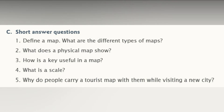What does a physical map show? A physical map shows mountains, rivers, plateaus, lakes, deserts, and other landforms. How is a key useful in a map? A key explains the meaning of the symbols or colors used on a map.